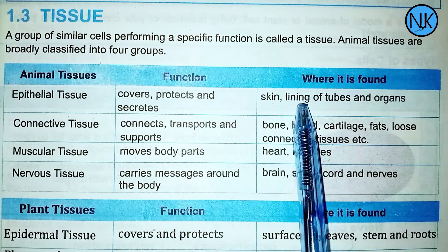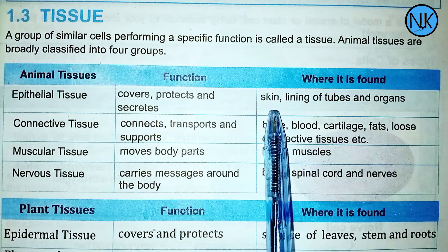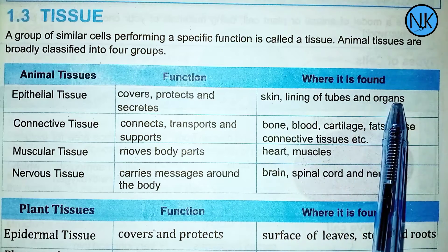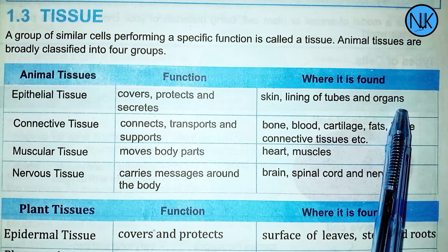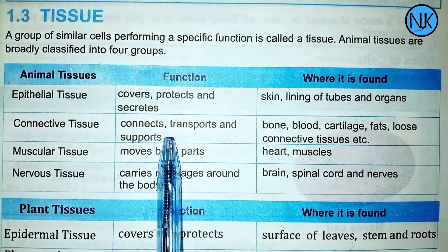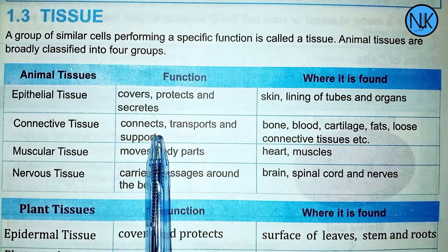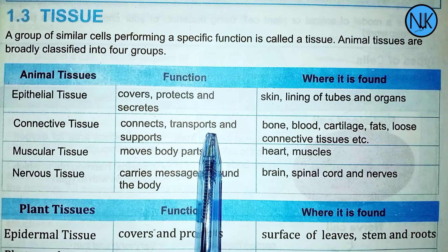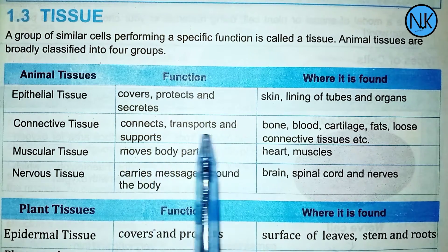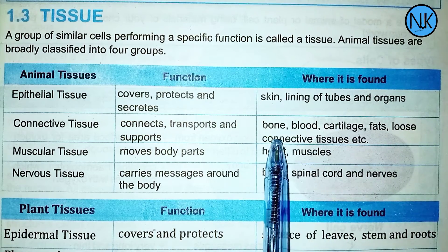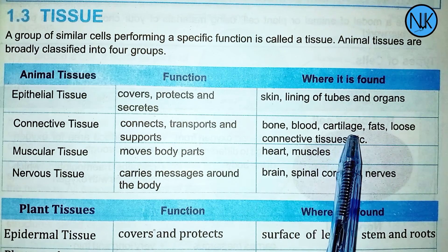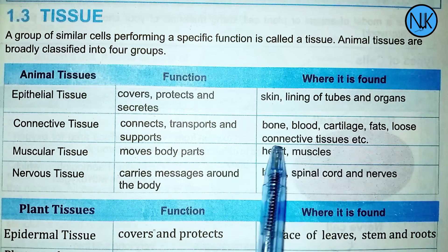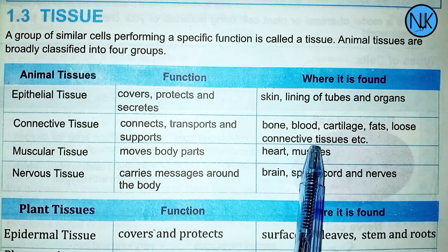Epithelial tissue is found in the skin and the lining of tubes. Connective tissue includes blood, cartilage, fat, and loose connective tissues, etc.